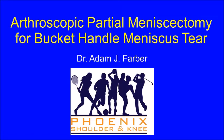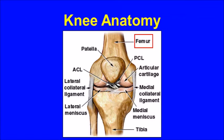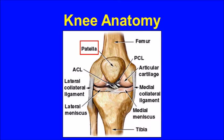In order to best understand this video, you must first understand some normal knee anatomy. The knee joint includes the thigh bone, called the femur, the shin bone, known as the tibia, and the kneecap, called the patella. Between the thigh bone and the shin bone, there are two soft tissue shock absorber cartilage pads, known as the meniscus.